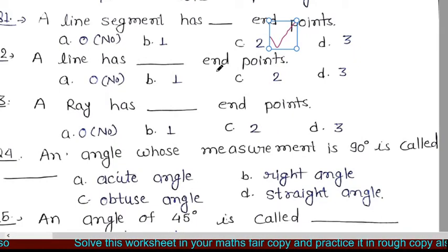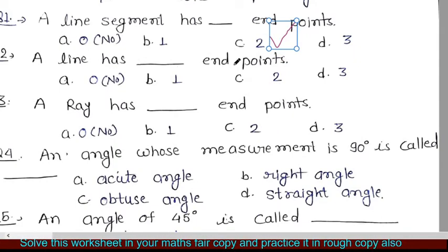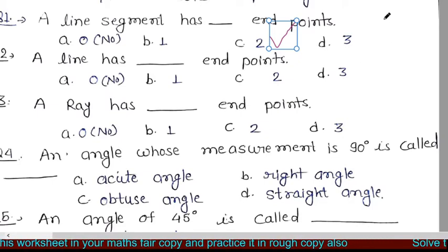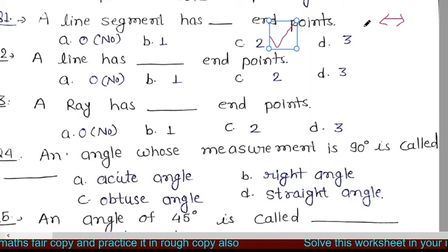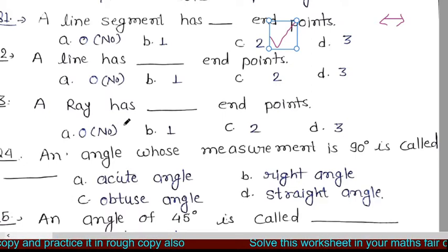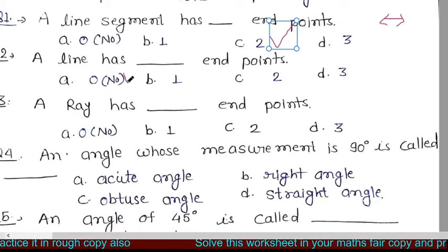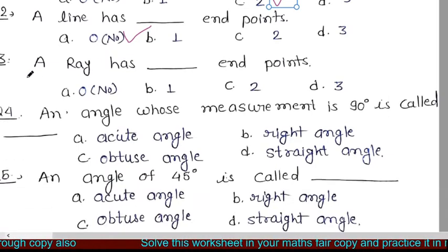A line has dash endpoints. So students, line का कोई भी endpoint नहीं होता है, क्योंकि ये both directions में extend होती है — इस direction में भी और इस direction में भी. इसकी length indefinite होती है. So a line has no endpoints. So 'a' is the correct answer.